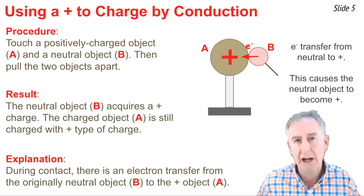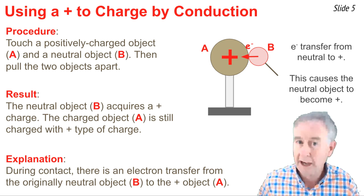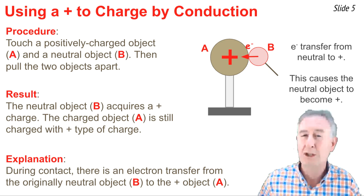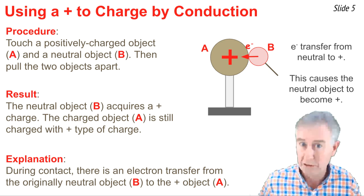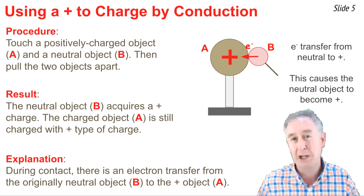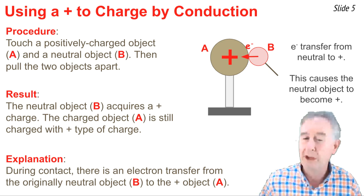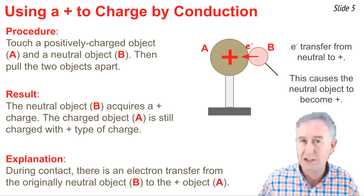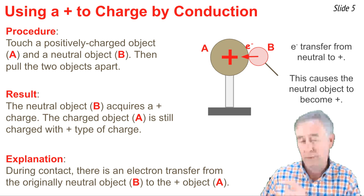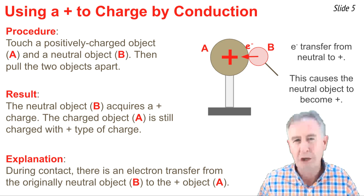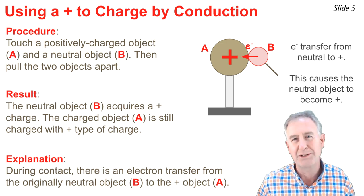When a neutral object loses electrons, it becomes positive. So object B is positive, and when a positively charged object gains some electrons, its amount of positive charge it has will decrease. And so that explanation is perfectly consistent with the observations of what the result is, and it follows our rules about the nature of electrons and protons.